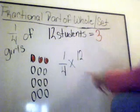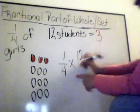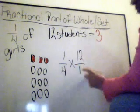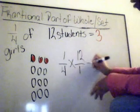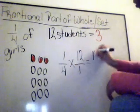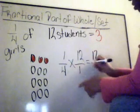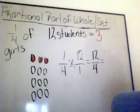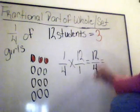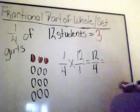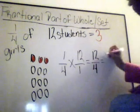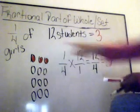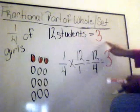How do you multiply a whole number with a fraction? Easy. Put 12 over one — any whole number over one — and multiply across. One times 12 is 12, four times one is four. Now you have 12-fourths, which is an improper fraction. We can break this down by dividing: 12 divided by four gives us three. There are three girls out of the 12 students. One-fourth of 12 equals three.